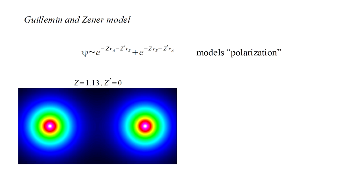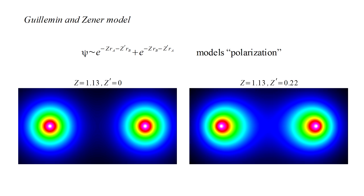If z' equals zero, we have the Finkelstein and Horowitz model in which each of the 1s atomic orbitals is spherically symmetric. A non-zero z' value causes the atomic orbitals to be stretched toward the other proton. This is physically reasonable.